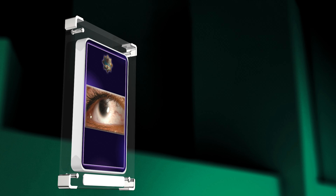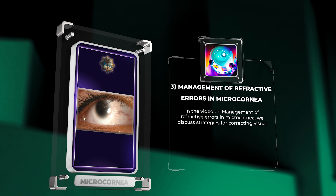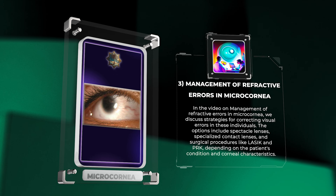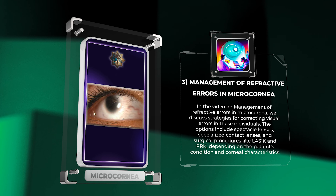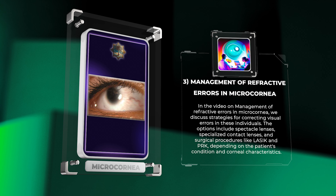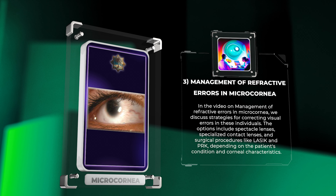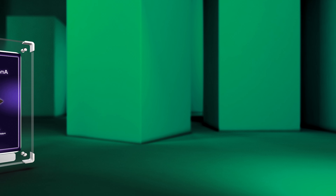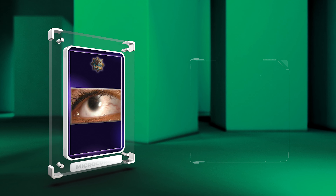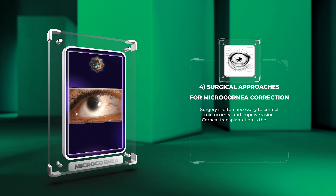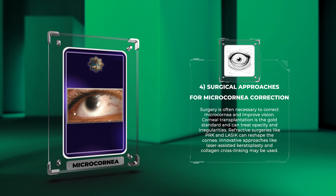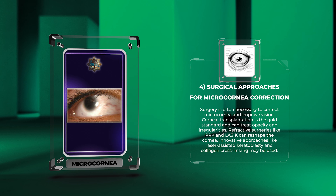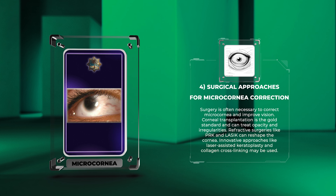Strategies for correcting visual errors in individuals with microcornea include spectacle lenses, specialized contact lenses, and surgical procedures like LASIK and PRK. Depending on the patient's condition and corneal characteristics, surgery is often necessary to correct microcornea and improve vision. Corneal transplantation is the gold standard and can treat opacity and irregularities, while refractive surgeries like PRK and LASIK can reshape the cornea.